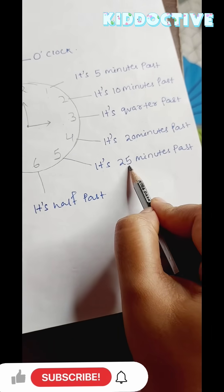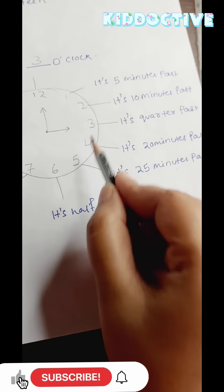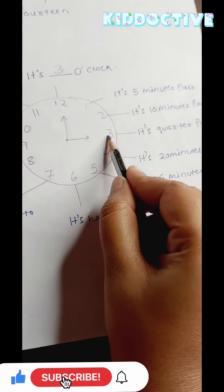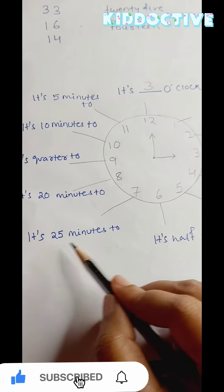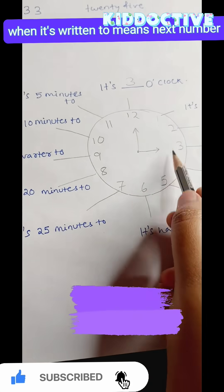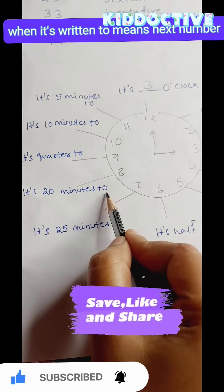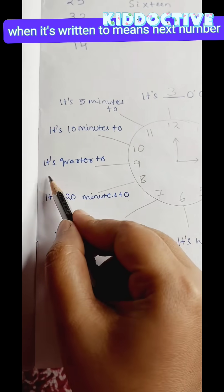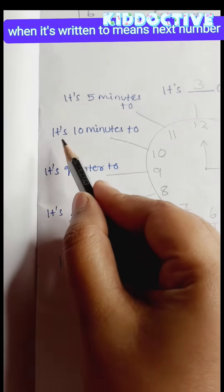It's 25 minutes past 3. It's half past 3. It's 25 minutes to 4. It's quarter to 4.